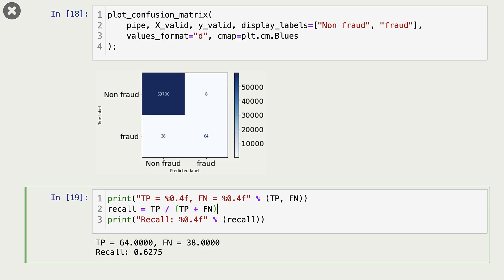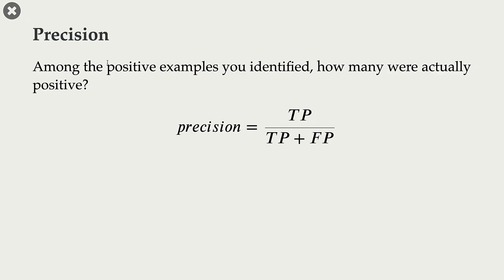Our next metric is precision. Precision tells you, among the positive examples you identified, how many were actually positive.